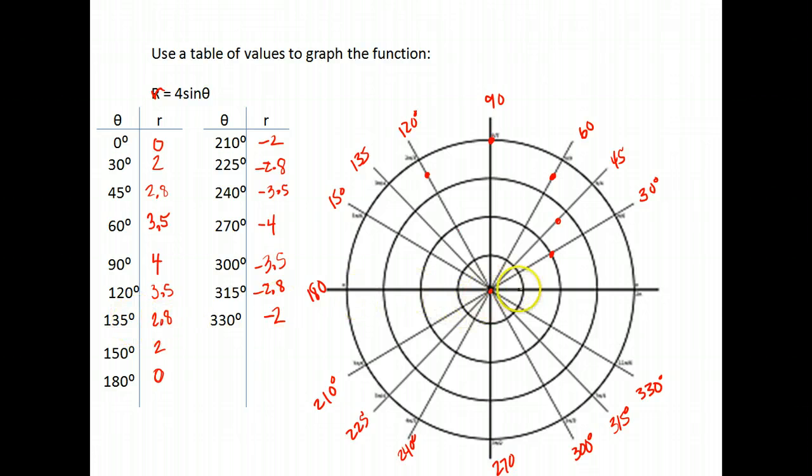135 and 2.8. Open up to 135 and go out 1, 2, 2.8. 150, 2. Open up to 150 and from the center go positive 1, 2 in that direction. And 180, 0. So we open up to 180, but we don't go anywhere. We stay right at the pole.